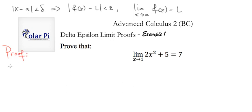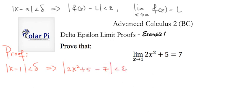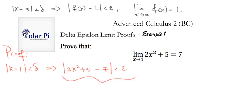The proof goes like this: we say the absolute value of x minus 1 is less than delta, and we need that to automatically imply that the absolute value of f(x) — which in our case is 2x² + 5 — minus L, so minus 7, is less than epsilon. As you've seen in Example 0, the task is to create a relationship between delta and epsilon, and in doing so, you'll often be concerned with manipulating the second statement.